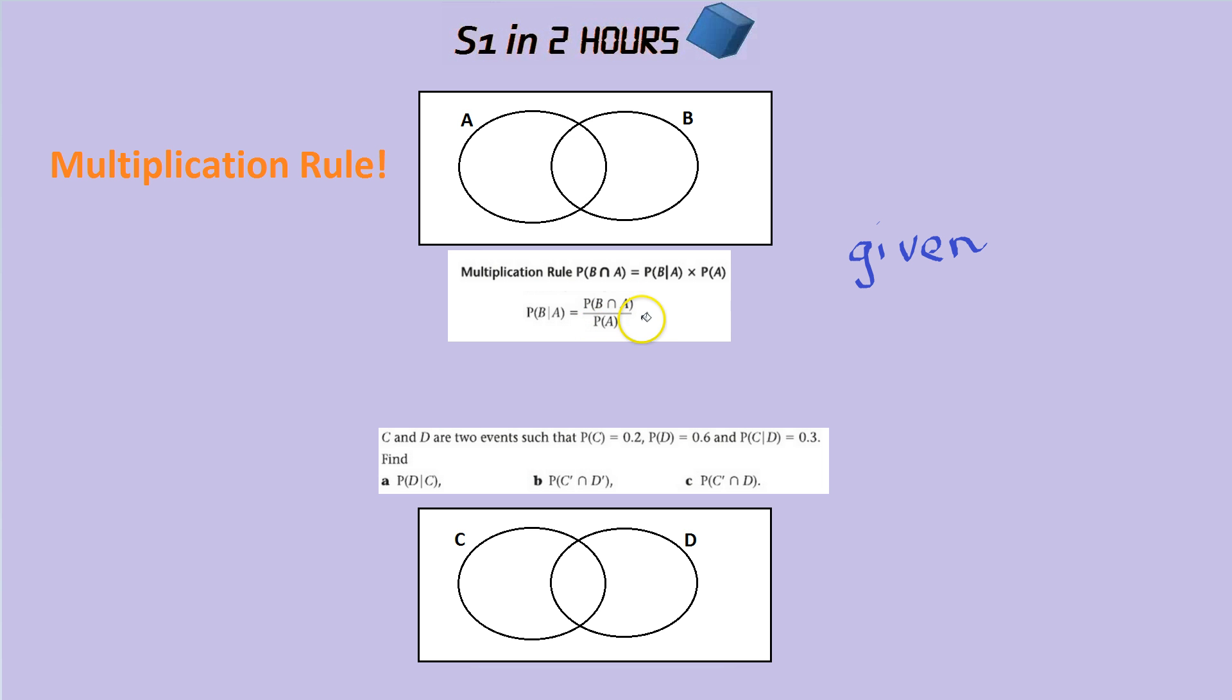If you times both sides by the probability of A, you get the multiplication rule up here. So it's the same thing, really, but I think this is easier to use.